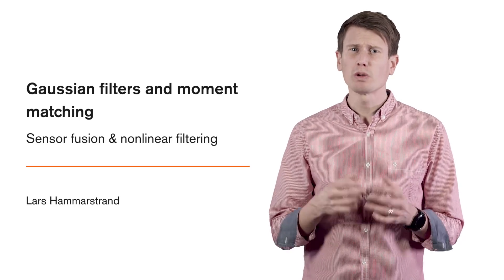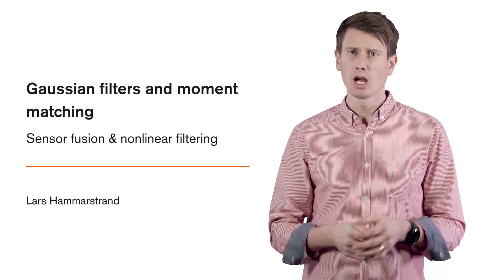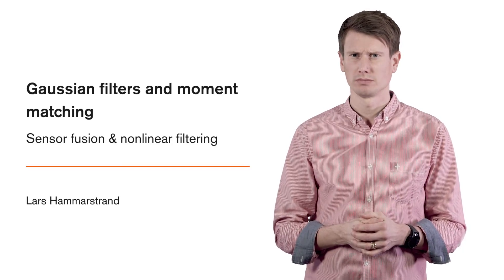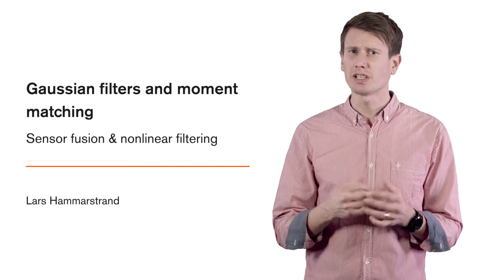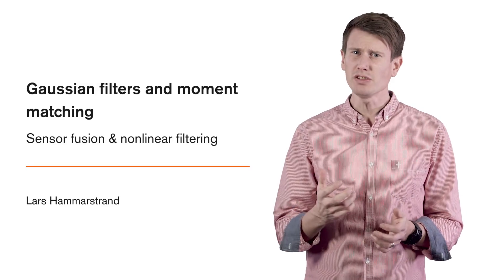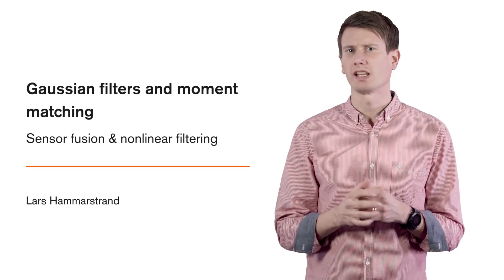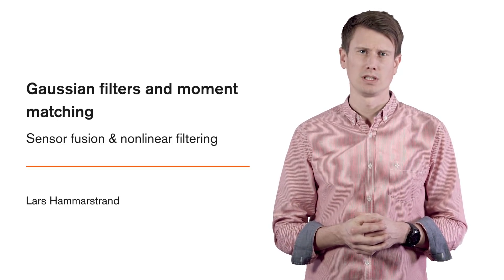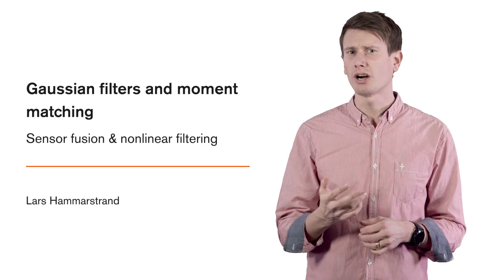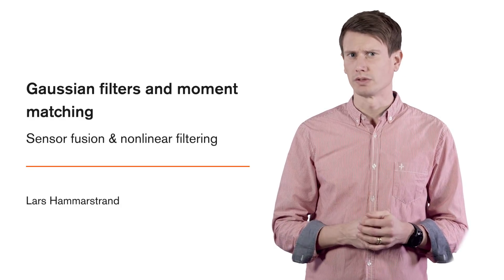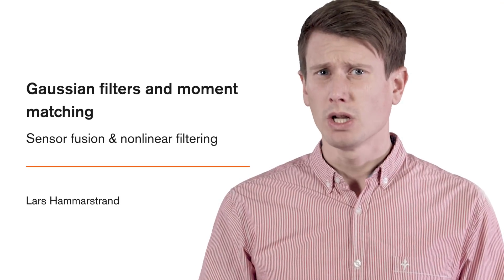In the following couple of videos, we will cover a family of Gaussian filters called sigma point filters that are based on the moment matching principle. There are quite a few filters based on this idea. In principle, the only difference between them is the method they use to compute the involved expectation integrals. The specific variants we will cover in this course are the unscented Kalman filter and the cubature Kalman filter. In this video, we will look at how we can explain this family of filters using the moment matching principle.